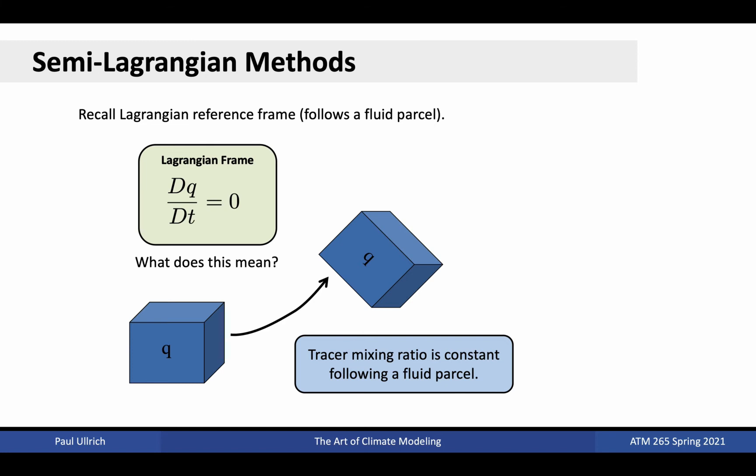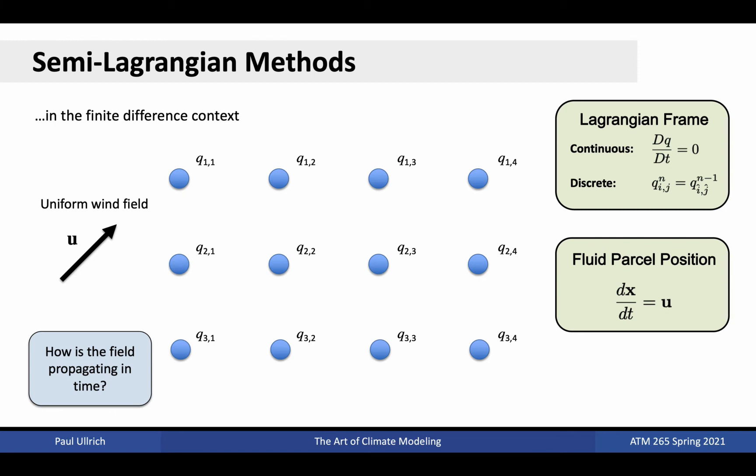Remember, in the Lagrangian frame, we can describe the atmosphere from the perspective of fluid parcels that move about in space. An equation such as the one shown here, which indicates that the material derivative of a particular mixing ratio is equal to zero, is used to represent conservation of mass following the fluid parcel. Or more specifically, that the tracer mixing ratio is constant in the Lagrangian frame. To begin, let's consider semi-Lagrangian methods in the finite difference context. Remember that under finite differences, the data is discretized as points on a grid. Here, we've depicted a small region containing three rows and four columns of grid points, indexed as a two-dimensional array. In the Lagrangian context, we assume each of these grid points corresponds to a fluid parcel, and so allow them to move around in response to the winds. For a prescribed wind field, the position of the fluid parcel can be obtained by using the definition of the velocity field. Namely, the velocity is equal to the time rate of change of position with respect to time. Thus, the time rate of change of position with respect to time is equal to the velocity. By integrating this equation forward or backward in time, we can determine the future or historical position of each fluid parcel.